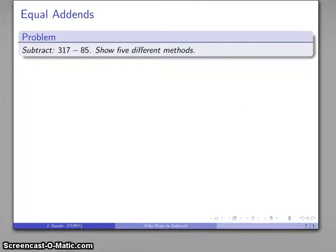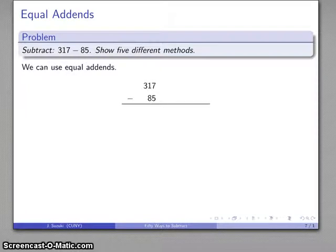How about equal additions? So equal additions and counting past are very similar methods, based on the same sort of idea that 85 is close to a nice benchmark number that's easy to work with.